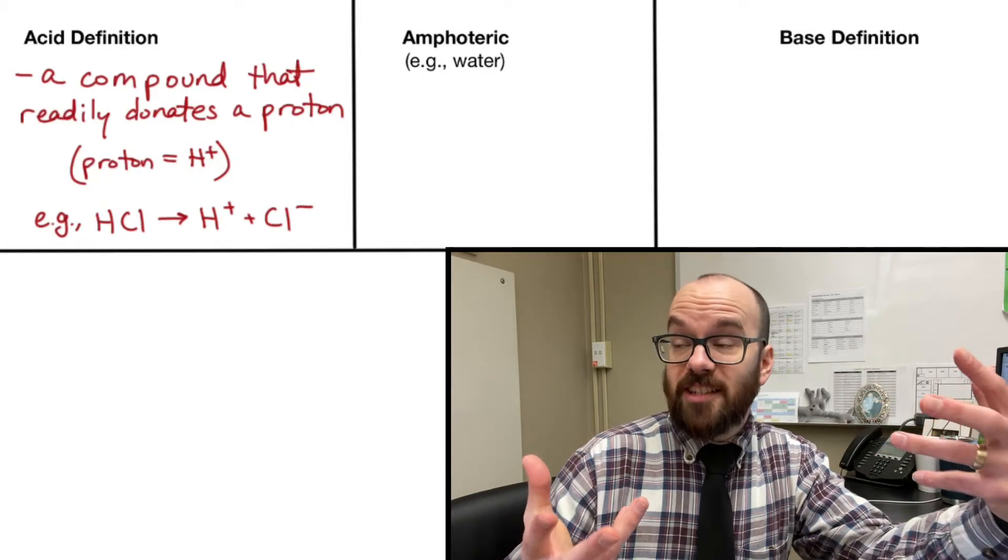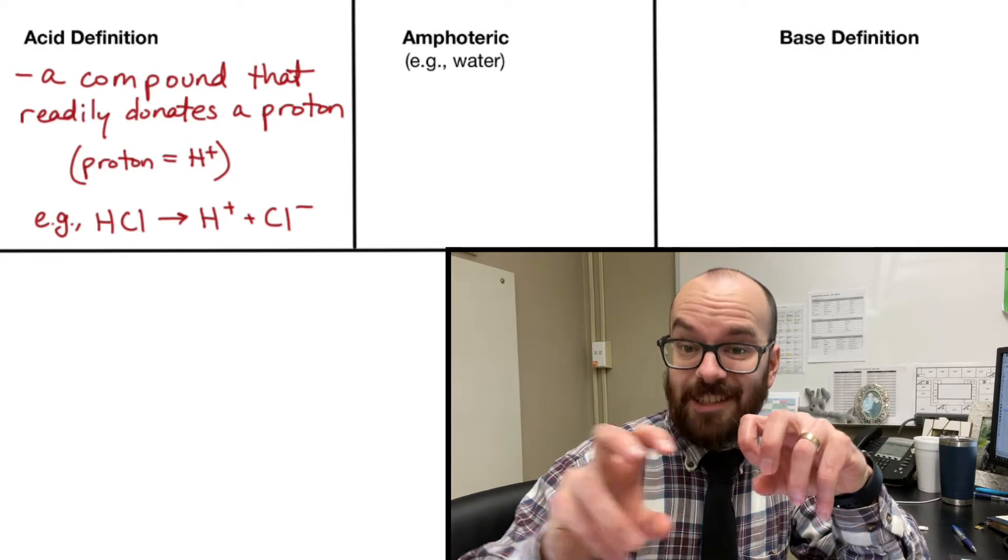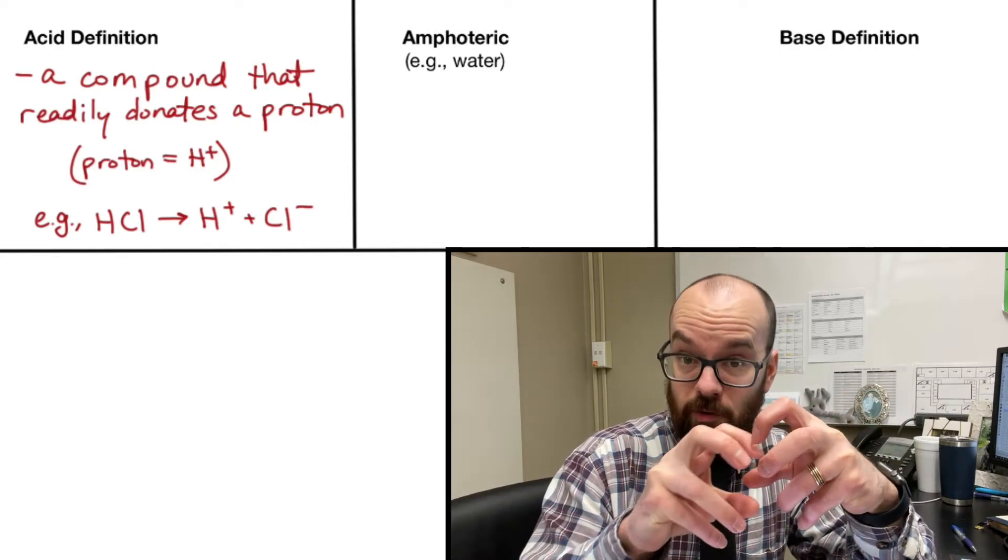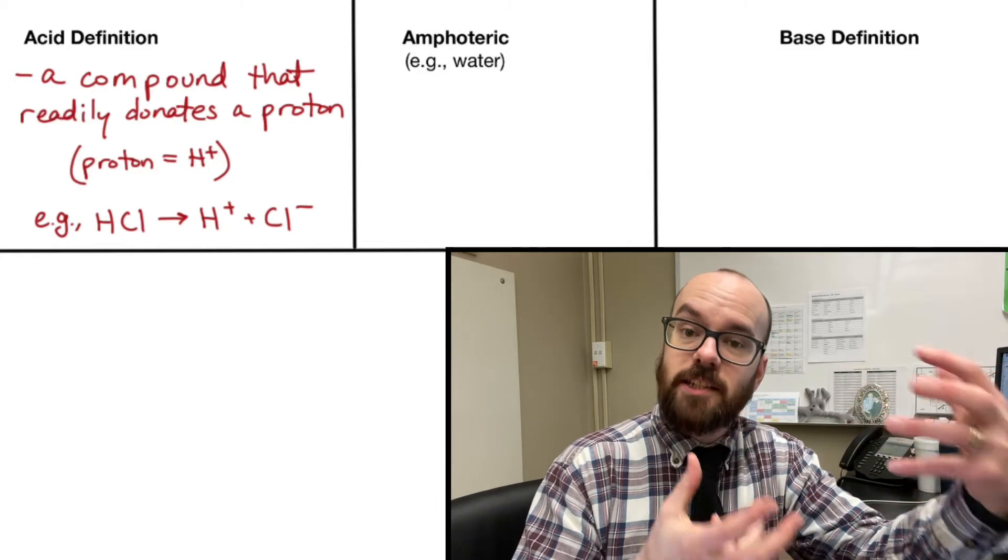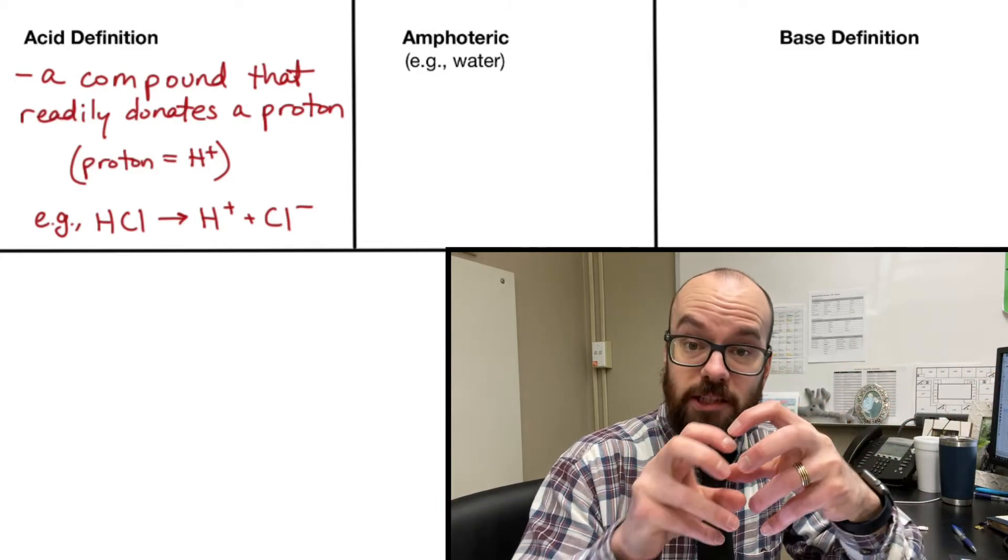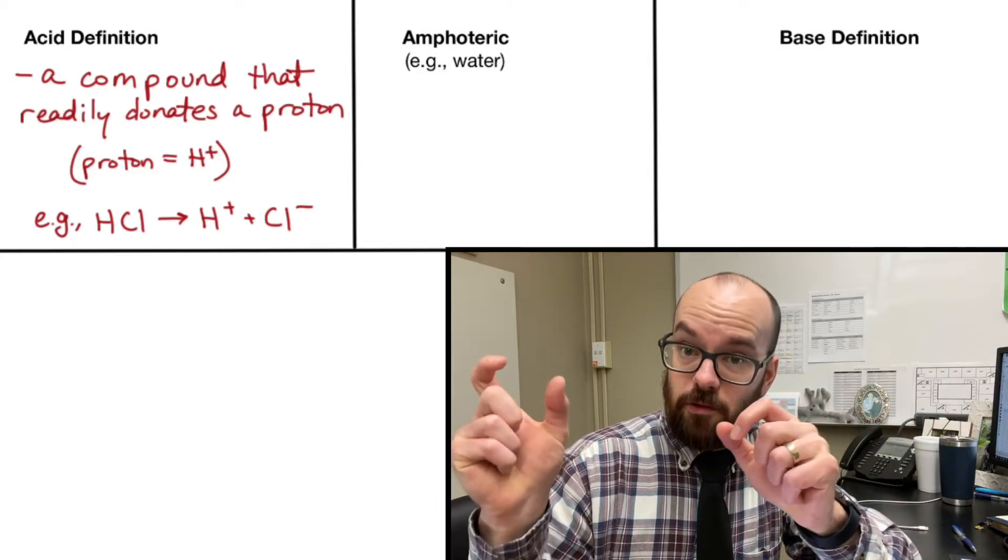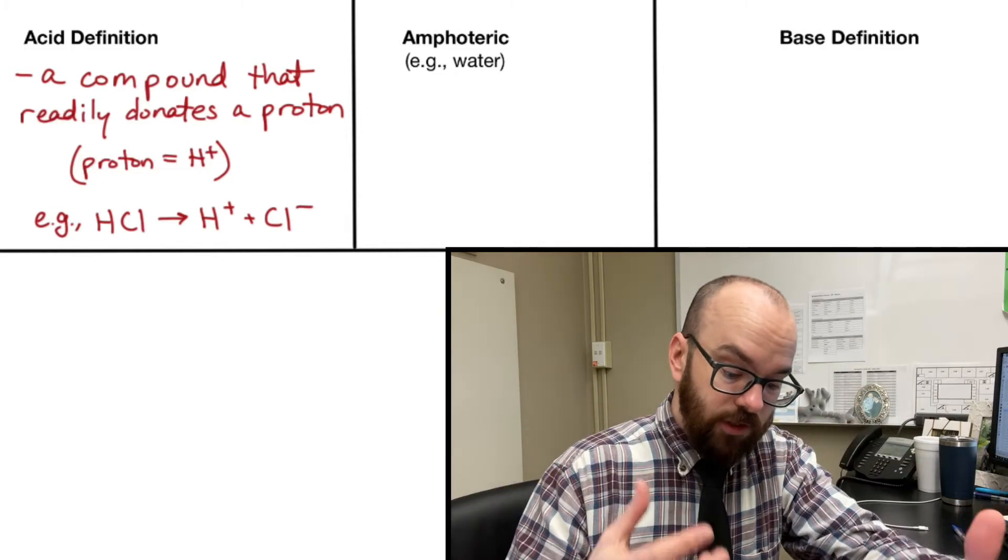HCl is a strong acid because it's really good at separating. If only some of the molecules were to separate from their hydrogen, then that would be a weak acid. But hydrochloric acid is a strong acid because all of the HCls will actually separate out into H+ and Cl-, therefore it's a strong acid.